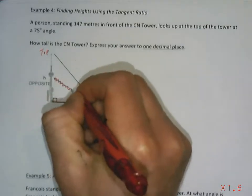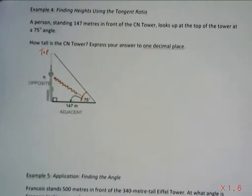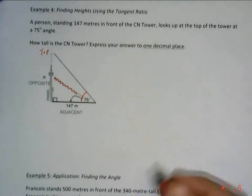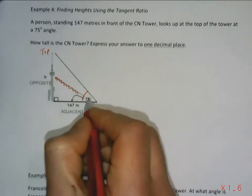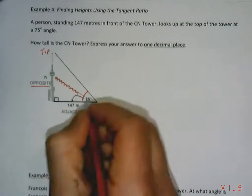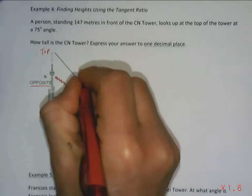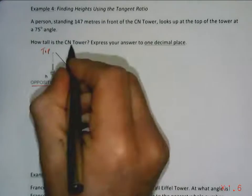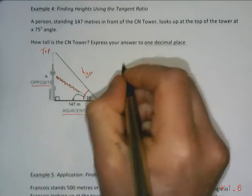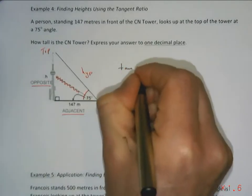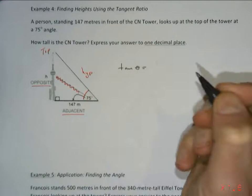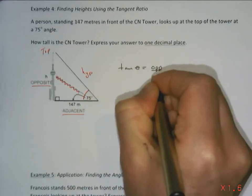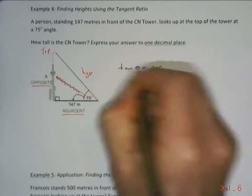Diagrams can make things more confusing than they should be if you've got too much stuff going on. So we've got this angle of 75. This is my opposite side. This is my adjacent side to the 75. This is my hypotenuse. And the question is, how tall is the CN Tower? The formula is tangent of any angle for a right triangle is equal to opposite over adjacent. That never changes.